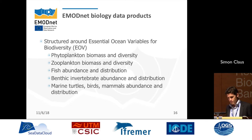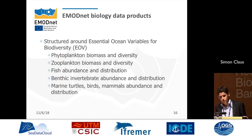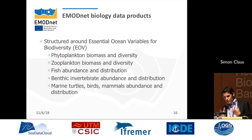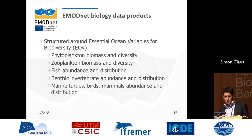A key input from end users is to structure products around the Essential Ocean Variables for biodiversity, organized by species group: phytoplankton biomass and diversity, plankton biomass and diversity, fish abundance and distribution, benthic invertebrates abundance and distribution, and marine turtles, birds, and mammals abundance and distribution. EMOTNET Biology focuses on these, while the Seabed Habitats project focuses more on microalgae, coral, and seagrasses.